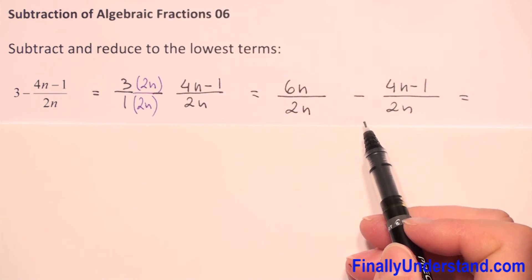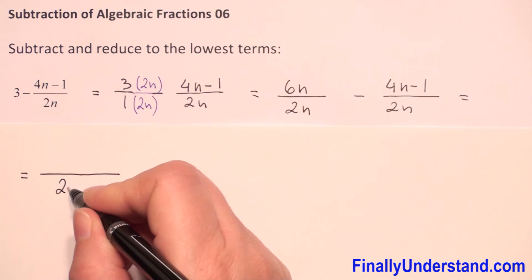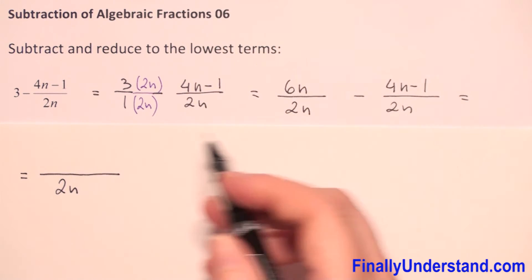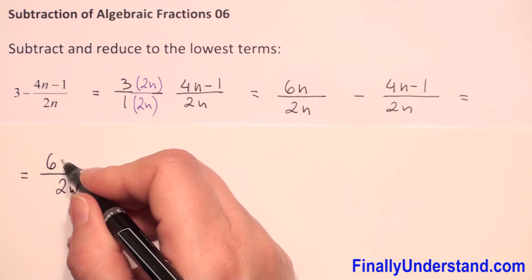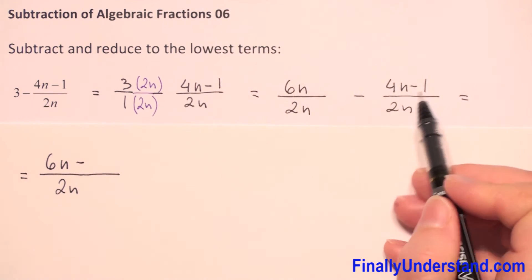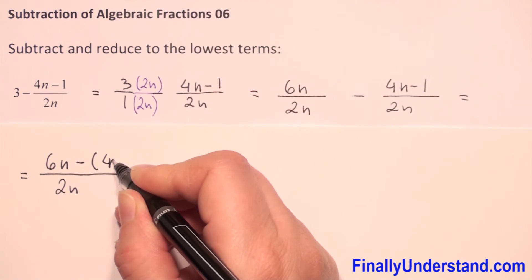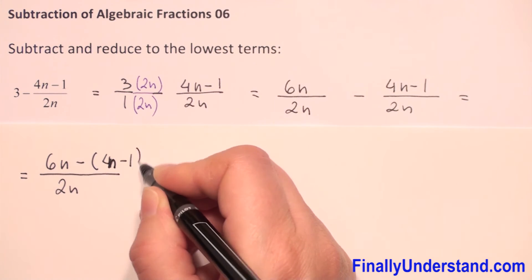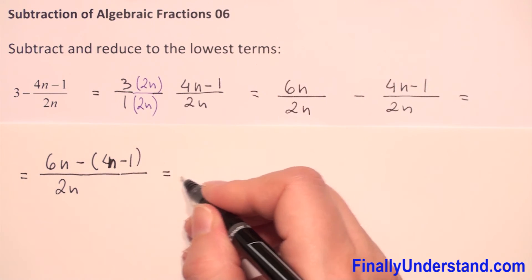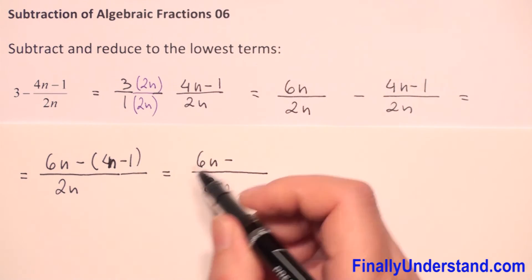Now when we have the same denominator we copy the denominator 2n and we have to subtract numerators. So we have 6n minus, and before this whole expression we have a negative sign, so we have 4n minus 1. This equals 2n in the denominator and in the numerator we have 6n minus...